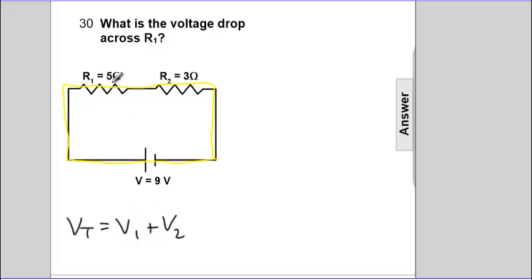Now to find the voltage for R1, we can use Ohm's law. We know that I1 equals V1 over R1. When we manipulate this, V1 equals I1 times R1.